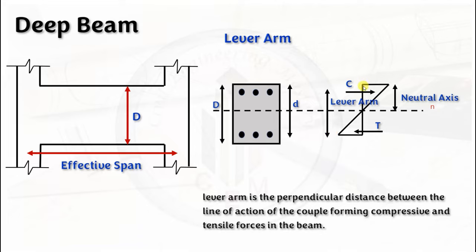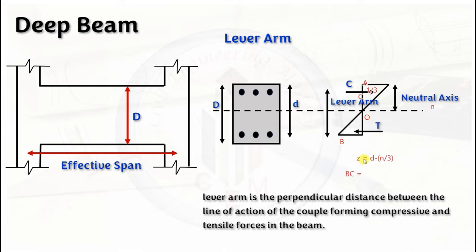To calculate lever arm, z equals d minus n divided by 3. Taking point A as the location of the tensile force, O as the neutral axis, B as the top compression resultant, and C as a reference point, the lever arm BC equals AB minus AC, which is the effective depth d minus n/3, where n/3 is the distance from the neutral axis to the compression resultant.